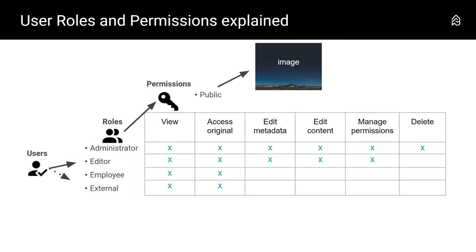These permissions are assigned to content items — like an image. If we take this image and follow the arrows backwards, we get the answer to who can do what on this image. This image has the permission 'public,' these four user roles have been assigned to this permission, and you can see in the matrix what they are allowed to do. Then you can look at an individual user and see which user roles have been assigned to control what that individual user is allowed to do on that particular image.